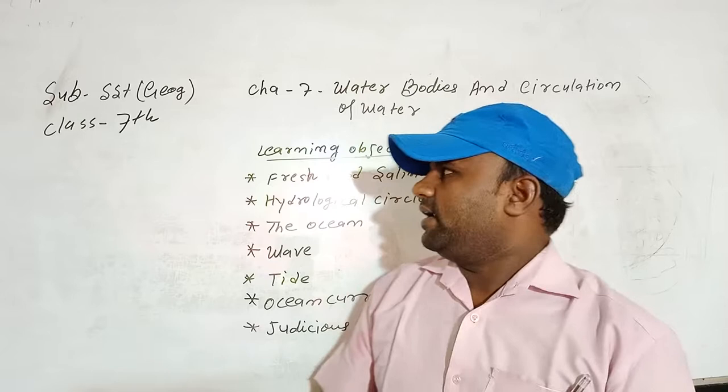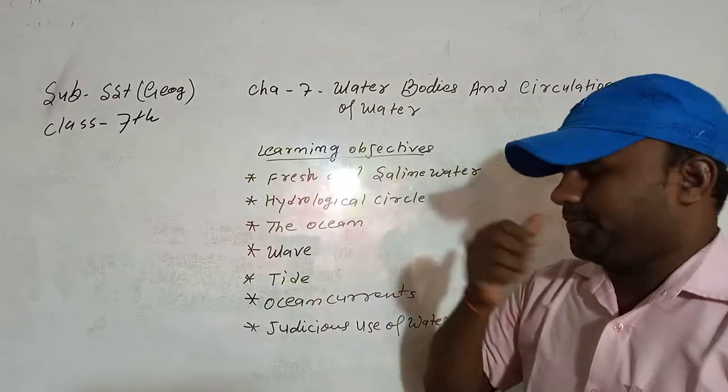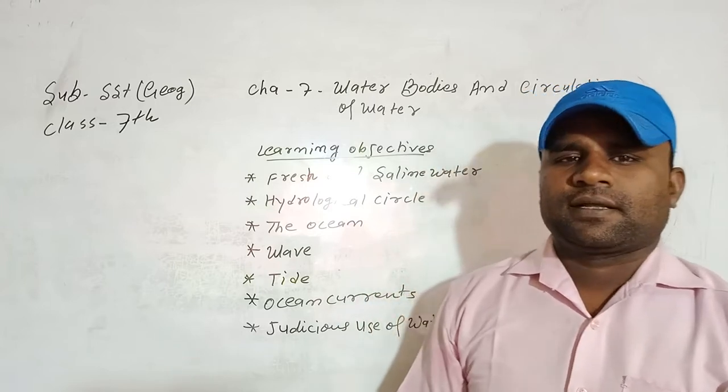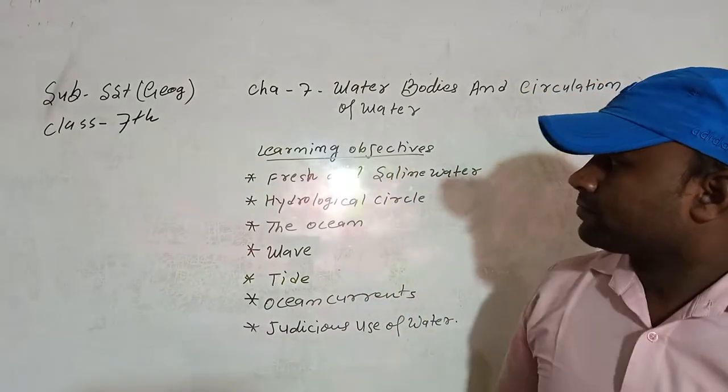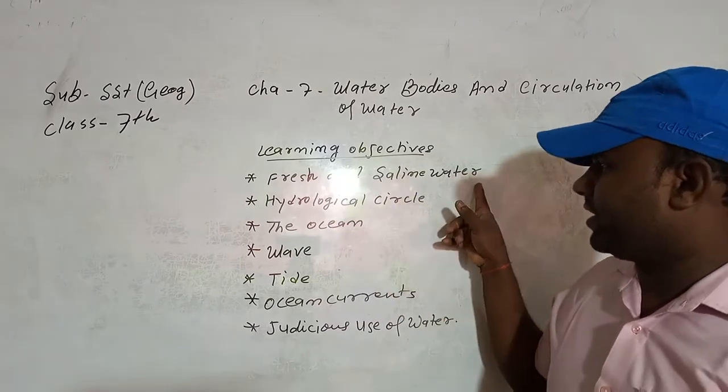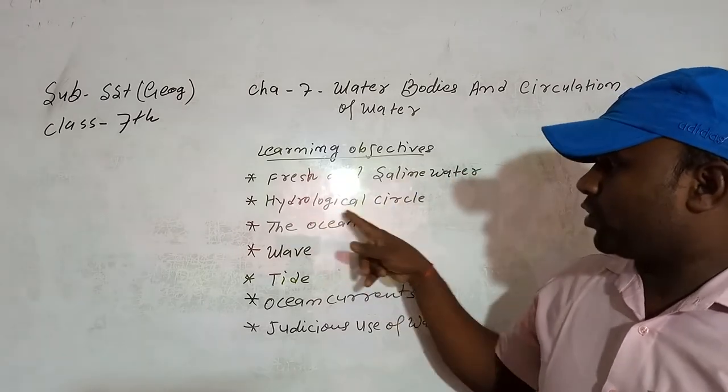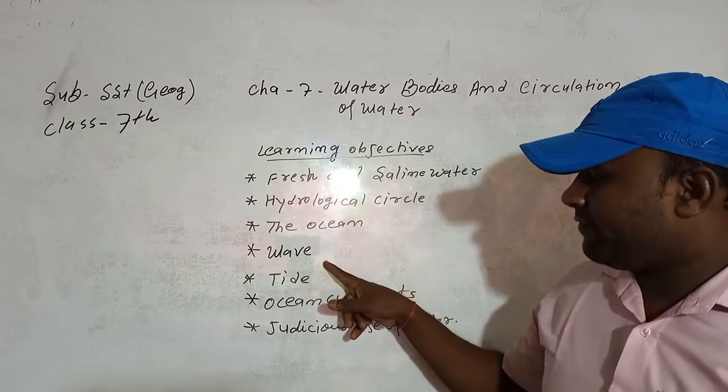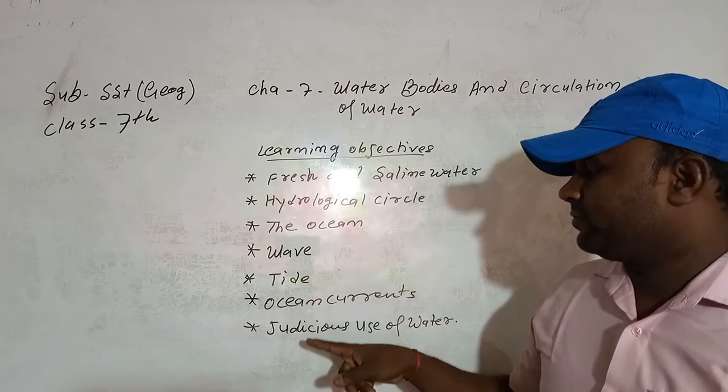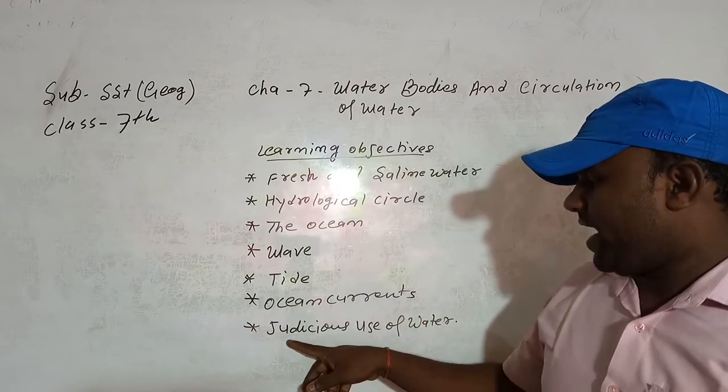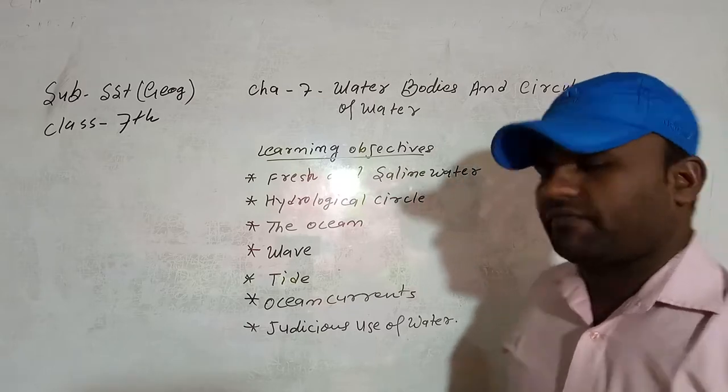your book has given many major points. These points are known as learning objectives. I will discuss, in this term, fresh water and saline water, hydrological circle, the ocean wave, tide, ocean currents and judicious use of water.